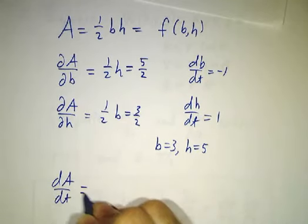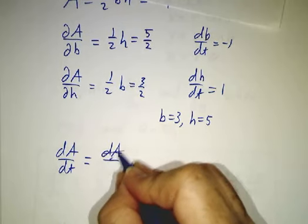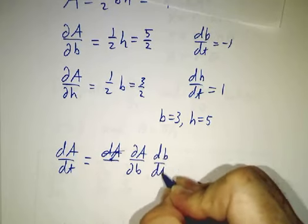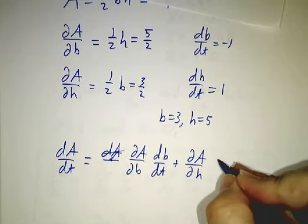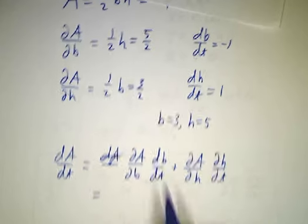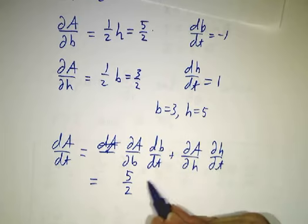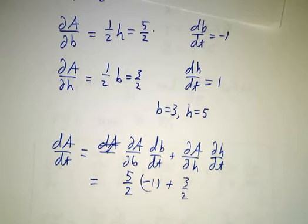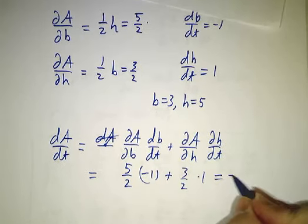We put it all together using the chain rule: dA/dt = (∂A/∂b)(db/dt) + (∂A/∂h)(dh/dt). Plugging in the values, we get -1.